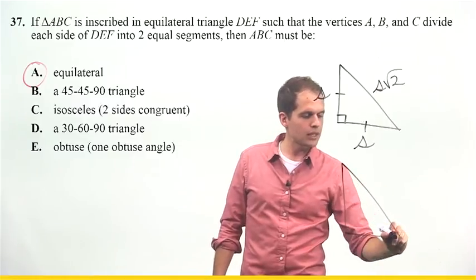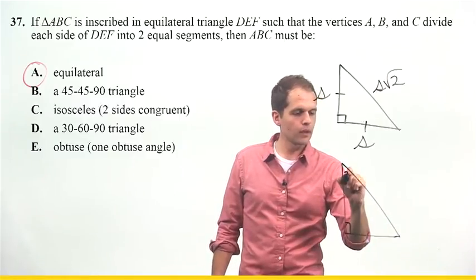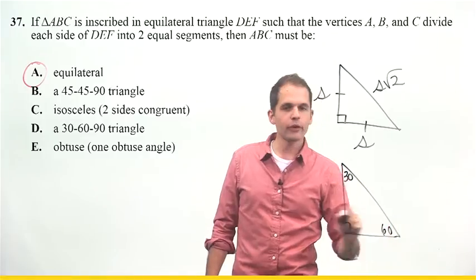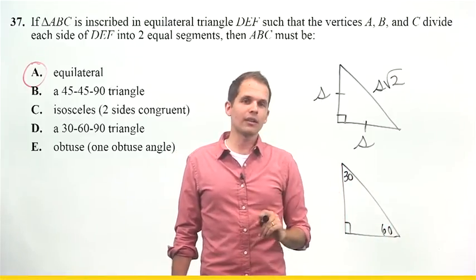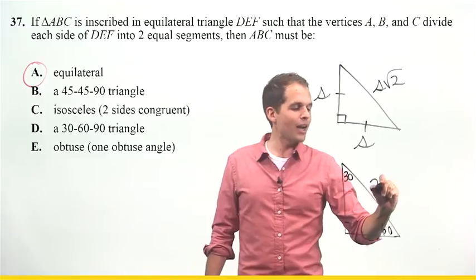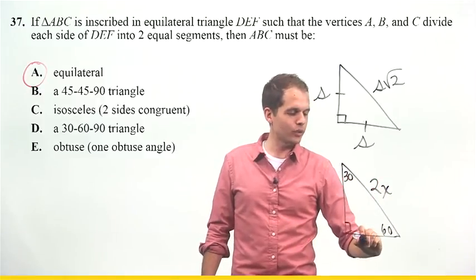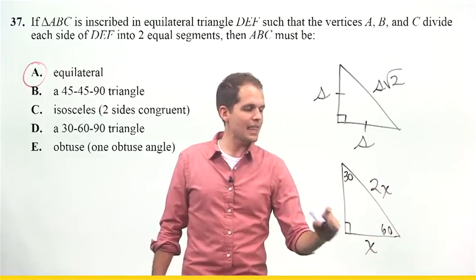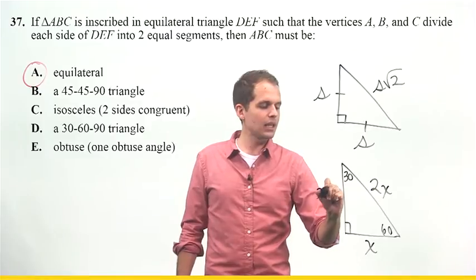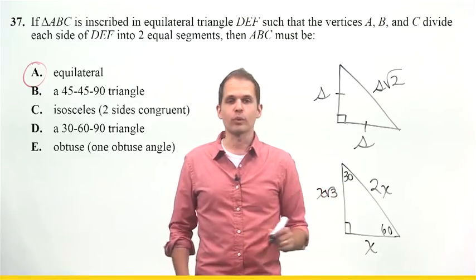So, there's my right angle, there's my 30, and my 60. And whenever I see a triangle like this, I always know the hypotenuse is twice this shorter side, and that this side, the one opposite the 60, is just X root 3.